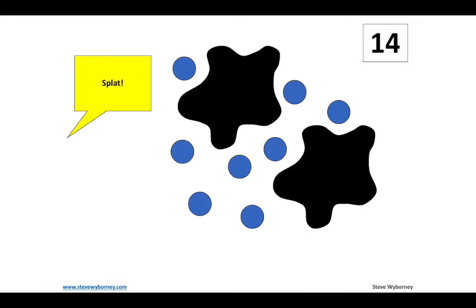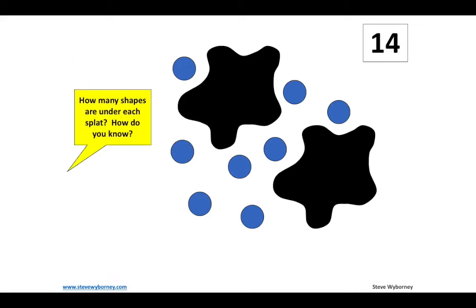Next, it does a splat. Some splats have one, two, and some have even more. This one has two splats covering some of the objects. My next strategy is to count what I do see left: three, four, five, six, seven, eight — I have eight objects left. So if I take 14 and subtract eight, that gives me six underneath the splats. That doesn't mean six under each one — it means six under both of them combined. If I take six and divide by two, that could help me find how many are under each one.